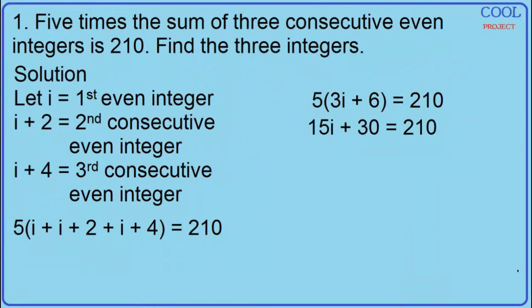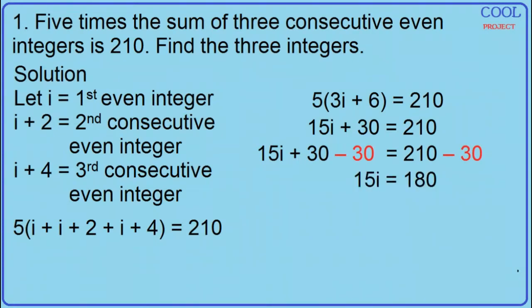15i plus 30 is equal to 210. Subtract 30 on both sides of the equation. Simplify: 15i is equal to 180. Divide both sides by 15. i is equal to 12.